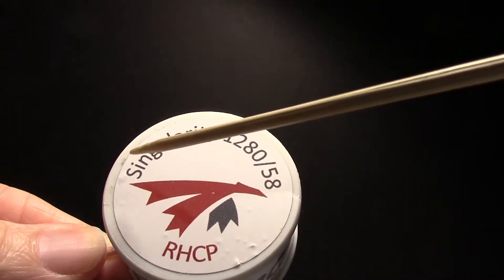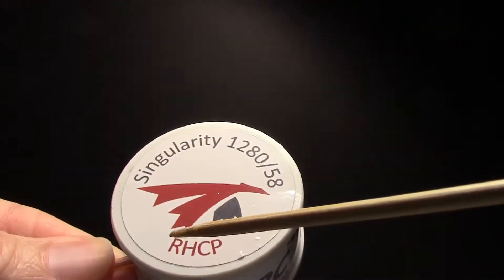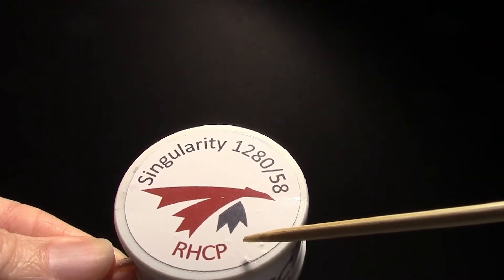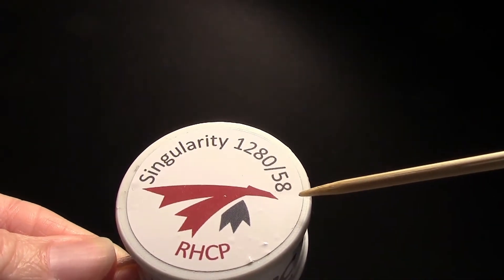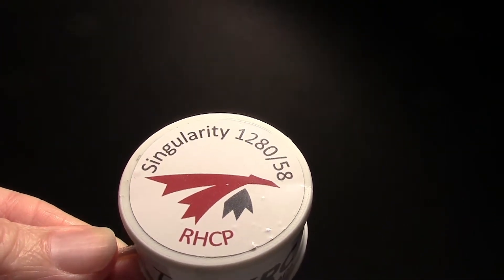So this is the singularity antenna from TrueRC and this is a right hand circular polarized set and it's for 1280 and 1258 megahertz. And I'm Dave from ERC by the way.